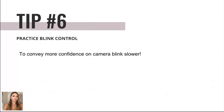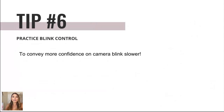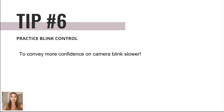Tip number six: one of the things that happens when people are nervous is they blink very fast. A trick to look more confident on camera is to blink slower. It will feel very weird — like you're falling asleep — but it's actually going to look normal, because nerves already make you blink fast, so slowing down balances it out. Just make sure you still blink frequently; staring without blinking is also unsettling. Blink slowly but frequently.